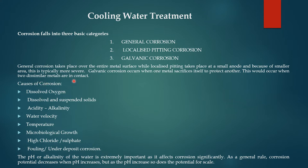Galvanic corrosion occurs when one metal sacrifices itself to protect another; it occurs when two dissimilar metals are in contact. The main causes of corrosion are: dissolved oxygen, dissolved and suspended solids, acidity or alkalinity in water, water velocity, temperature, microbiological growth, high chloride or sulfate content, and fouling under-deposit corrosion.